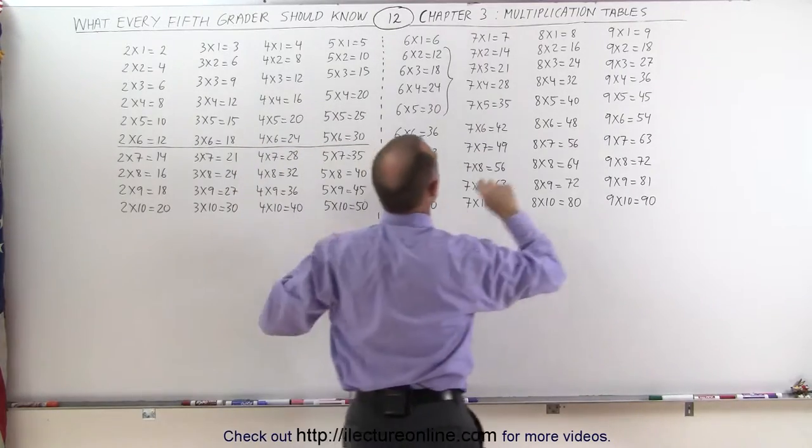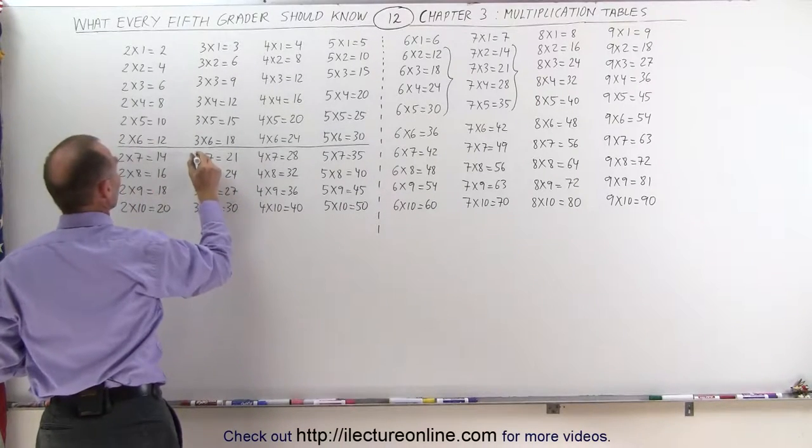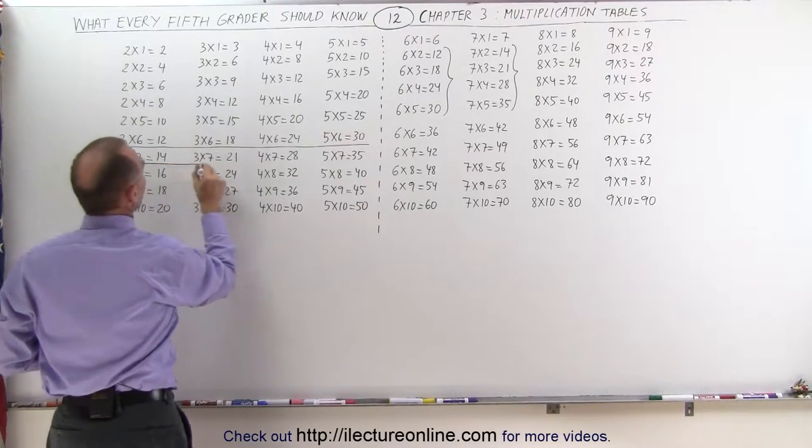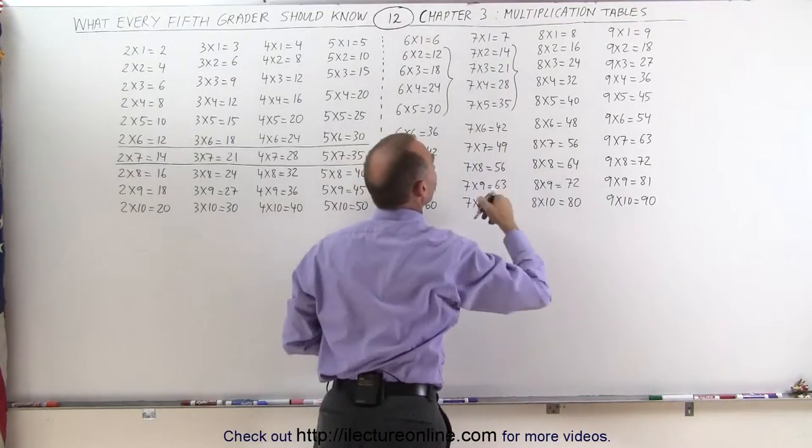For example, we can look at these right here, and come over here, and notice that 2 times 7, 14, 3 times 7, 21, and so forth, you get the same answers here as you do over here.